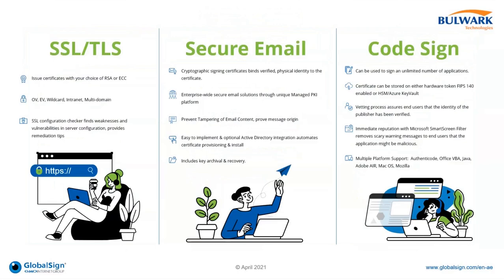For SSL/TLS certificates used to secure web servers and websites, GlobalSign offers various flavors ranging from different levels of identity assurance - from Domain Validation to Organization Validation and Extended Validation certificates. We also provide wildcard names, intranet SSL, and multi-domain SSL in the form of Subject Alternative Names. We support all key algorithms ranging from RSA to ECC, and hash algorithms from SHA-256 to SHA-384 and above.